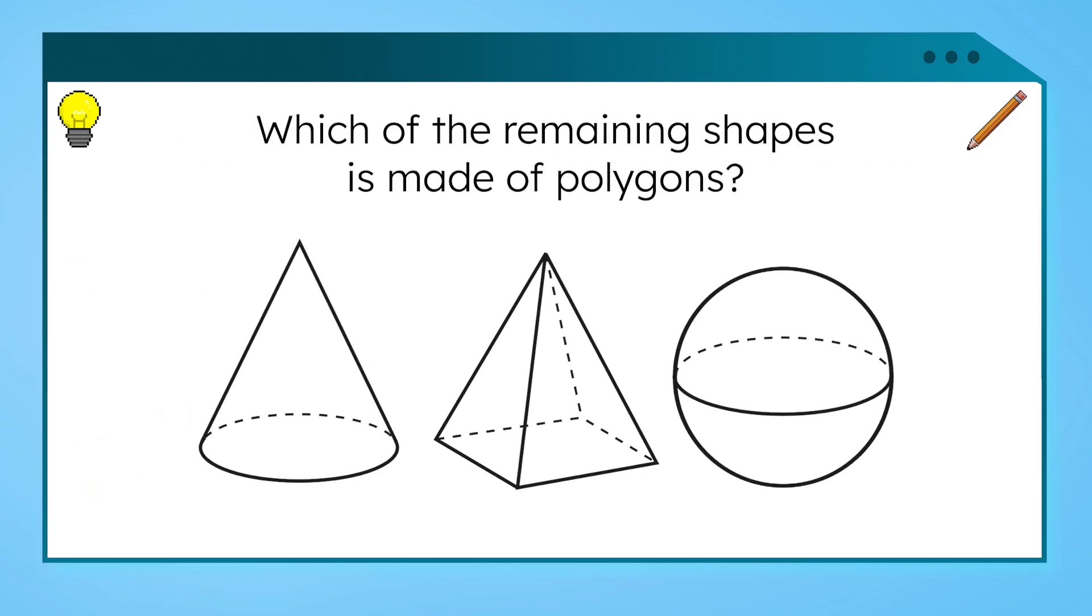Next question. Which of the remaining shapes is made of polygons? Which shape could it be? What about this shape? It has triangles all around it with a square on the bottom. Do you know what it is?